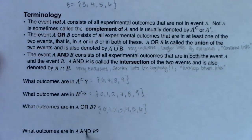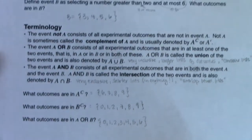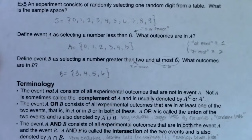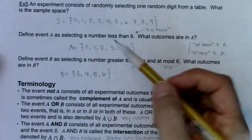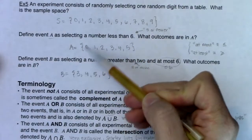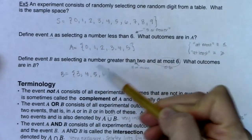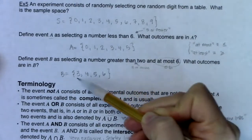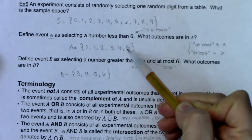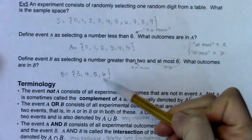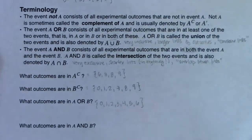For A AND B, we look for the overlap. Zero wasn't in both, one wasn't in both, two wasn't in both, but three was in both, four was in both, five was in both. Six is not in both, so it doesn't make it into the AND. The outcomes in A and B are 3, 4, and 5.